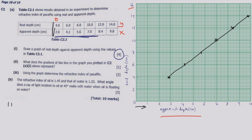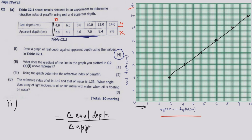Let us look at question A, Roman numeral 2: what does the gradient of the line in the graph you drew in C2 Roman numeral 1 above represent? Basically the graph is showing us the change — the change in the real depth over the apparent depth, which is the slope. All these points are giving us basically just that ratio, which is the gradient.